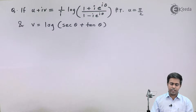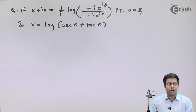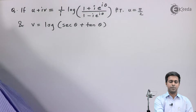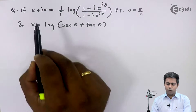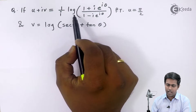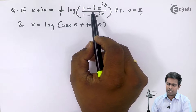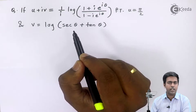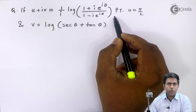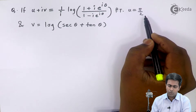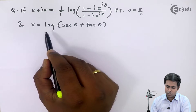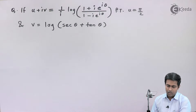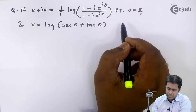Hi friends. In this video we are going to see a problem based on logarithm of complex numbers. Here u + iv is given which is (1/i) log of (1 + ie^(iθ)) / (1 - ie^(iθ)), and we have to prove that u = π/2 and v = log(sec θ + tan θ).